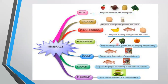Iodine controls the functioning of the thyroid gland. Sodium is required for the proper functioning of the nervous system. Minerals are needed in small quantities for optimal health, and each mineral is found in a particular kind of food.